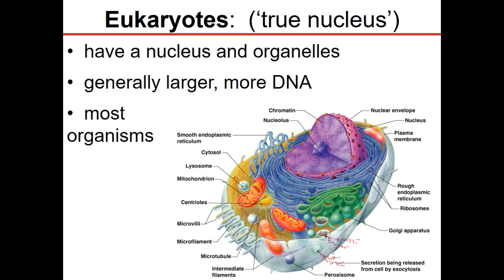Eukaryotes — the term eukaryote means 'true nucleus.' They have a nucleus, a membrane-bound organelle. They are larger and more complex. They have more DNA found within the nucleus, and most of the organisms that we know are eukaryotes. That doesn't mean that there are more eukaryotes than prokaryotes — bacteria outnumber eukaryotes a lot. But in terms of different species, we know more eukaryotes than we do bacteria or archaea.